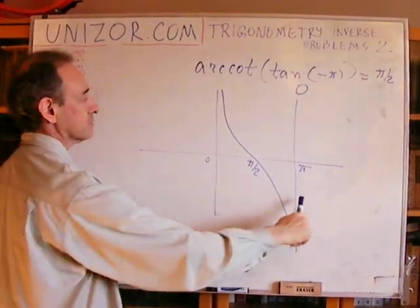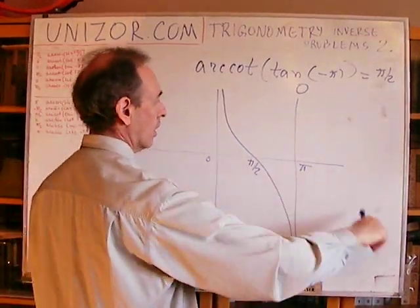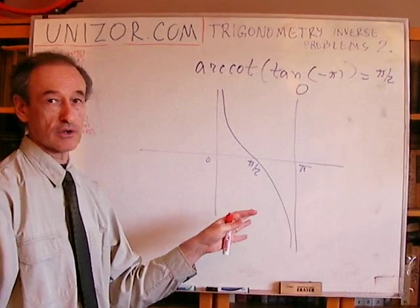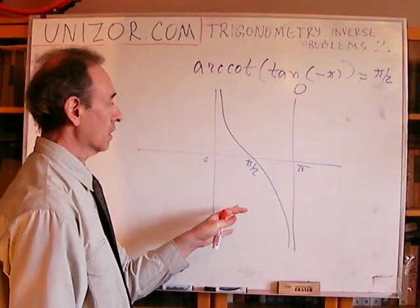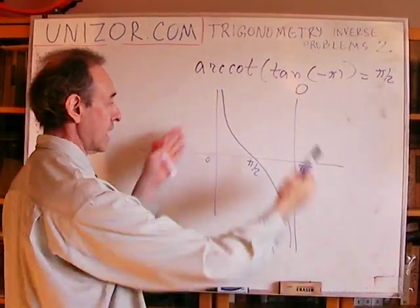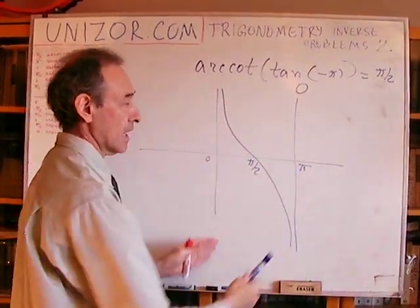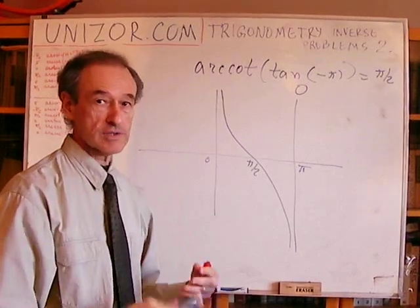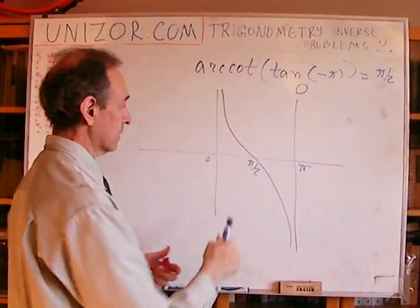I deliberately did not draw the other branches of the cotangent function, because they are outside the area where the inverse function is defined.